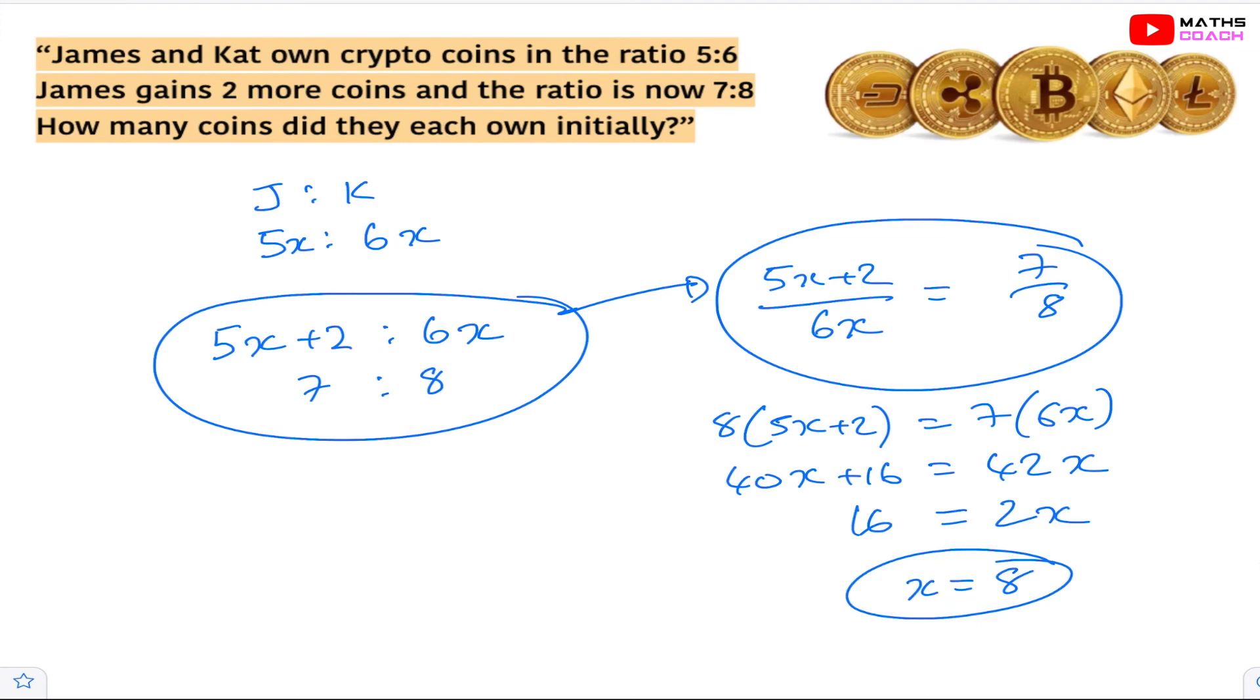So how many coins did they have initially? James had 5x coins so James would be 5 times 8 which is 40. And as for Kat, well Kat had 6x so 6 times 8 which is 48. So in total they had 88 coins, but the question says how many did they own initially on their own? So that's just 40 coins and 48 coins, and of course in total it was 88 coins.